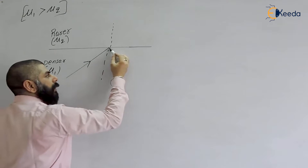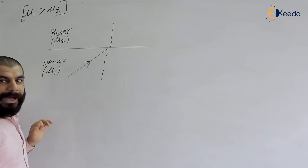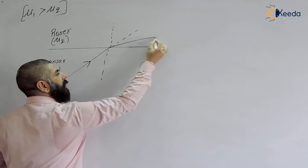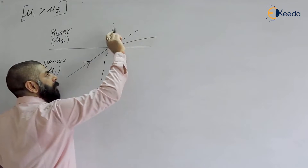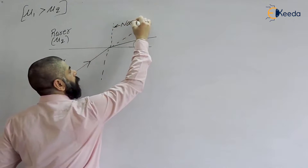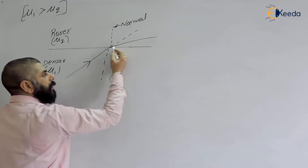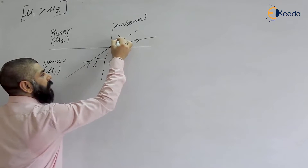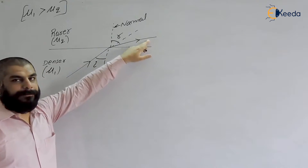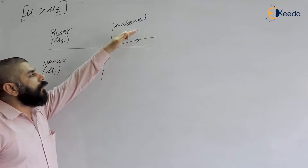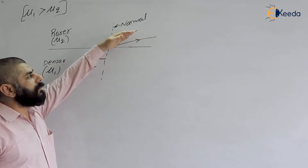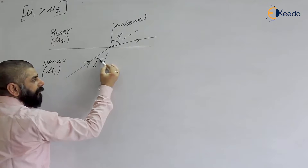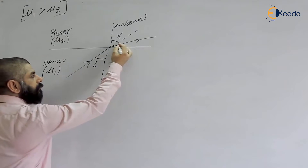The light will not follow a straight line — it will bend from its path. Moving from denser to rarer medium, it bends away from the normal. This is the incident ray, and this is the refracted ray. The angle of incidence is the angle between the incident ray and the normal, and the angle of refraction is the angle between the refracted ray and the normal.